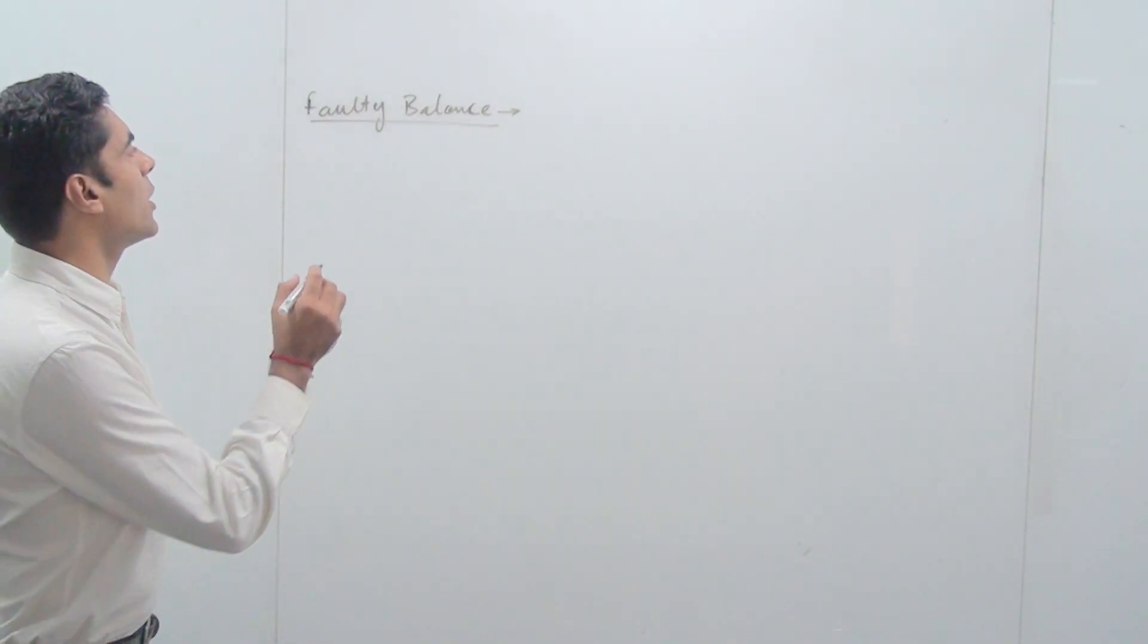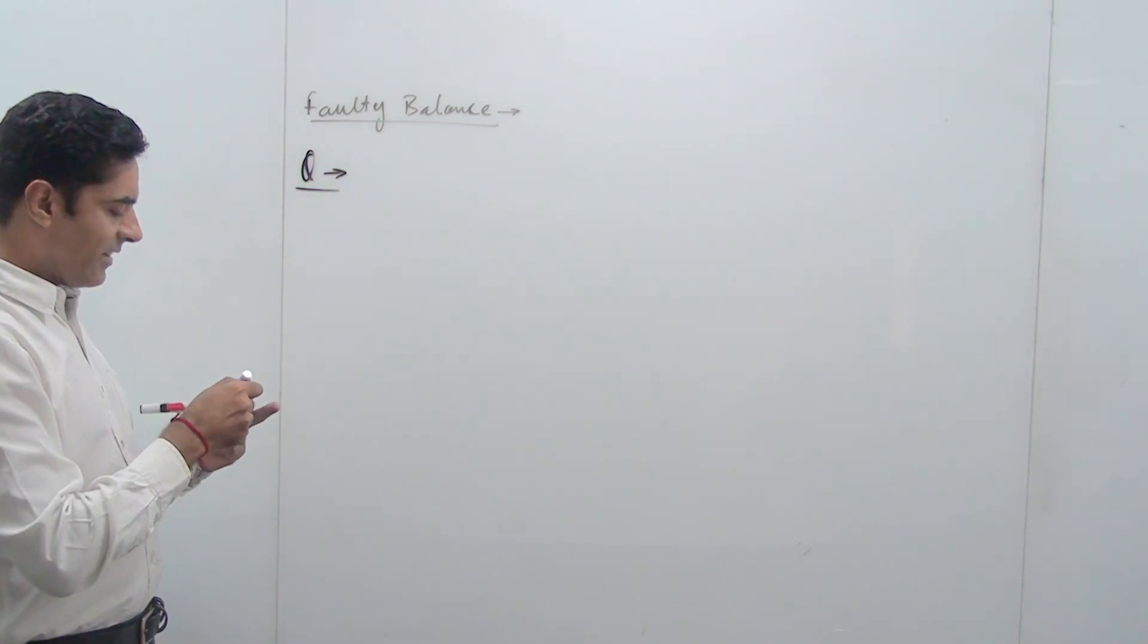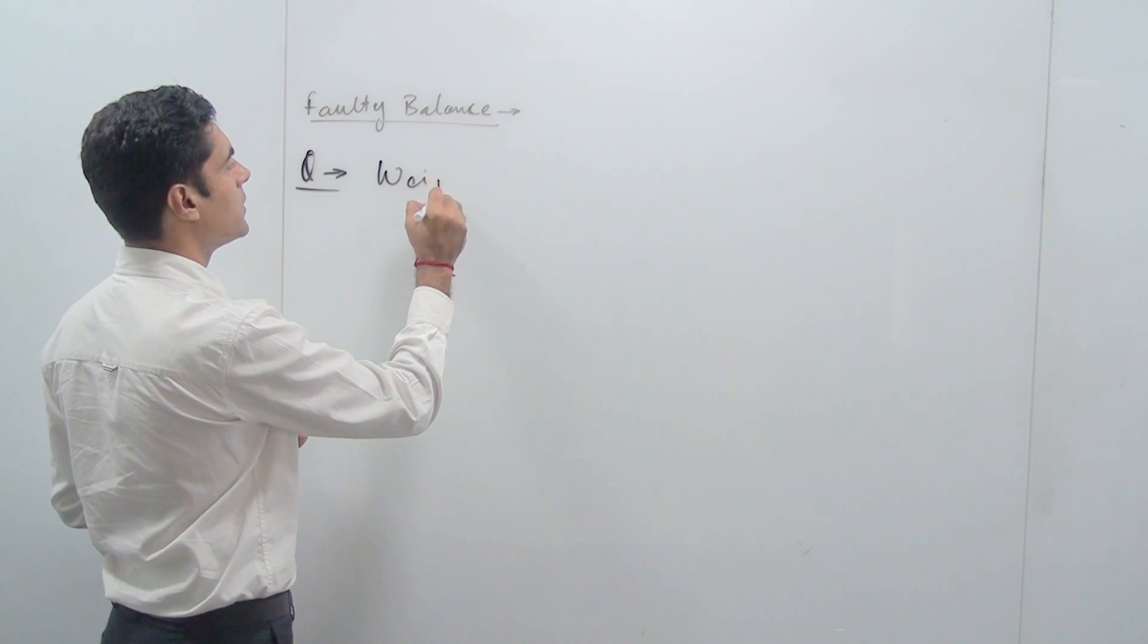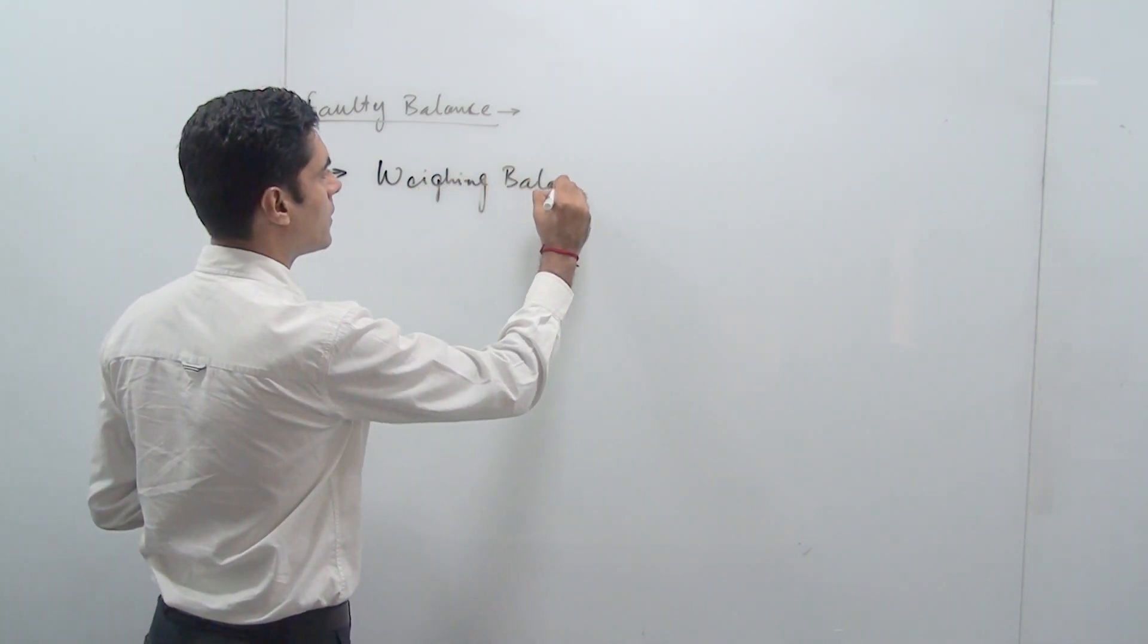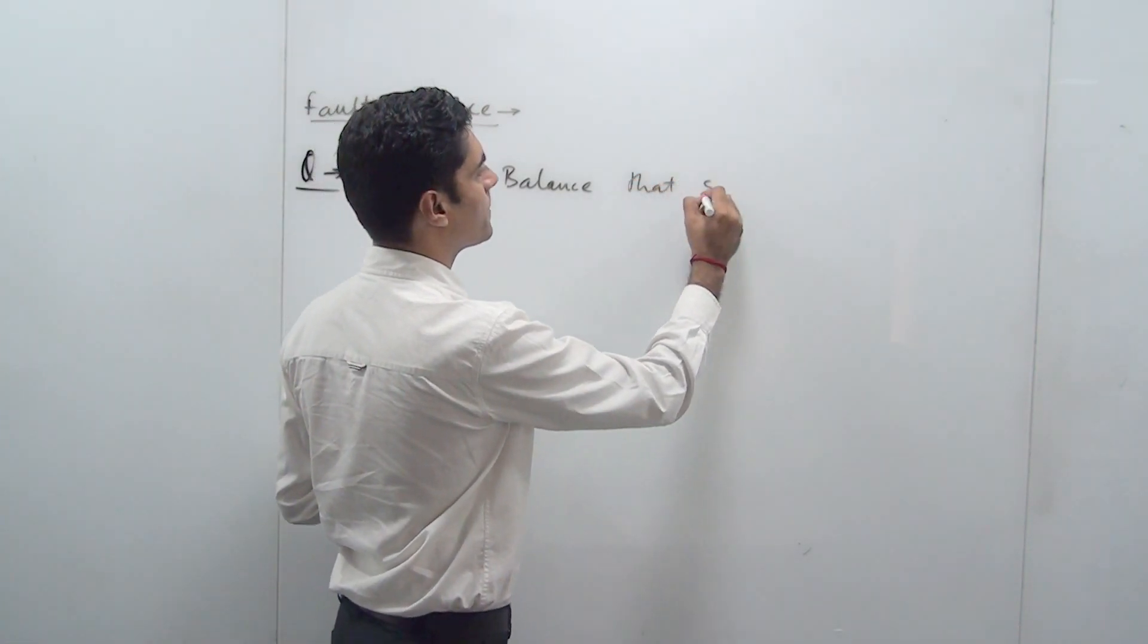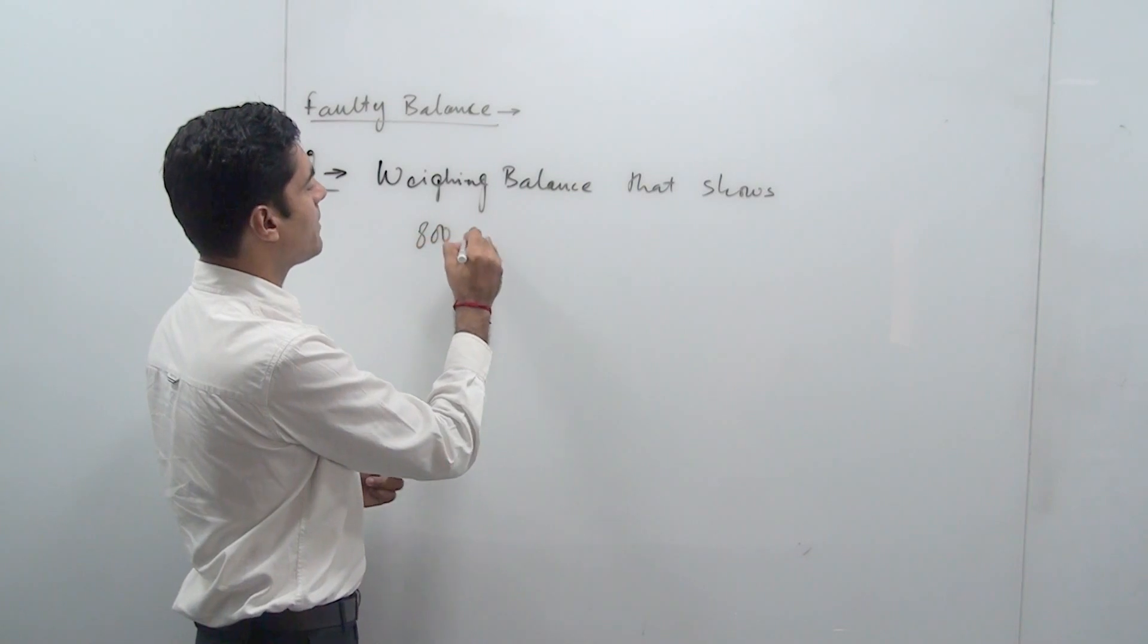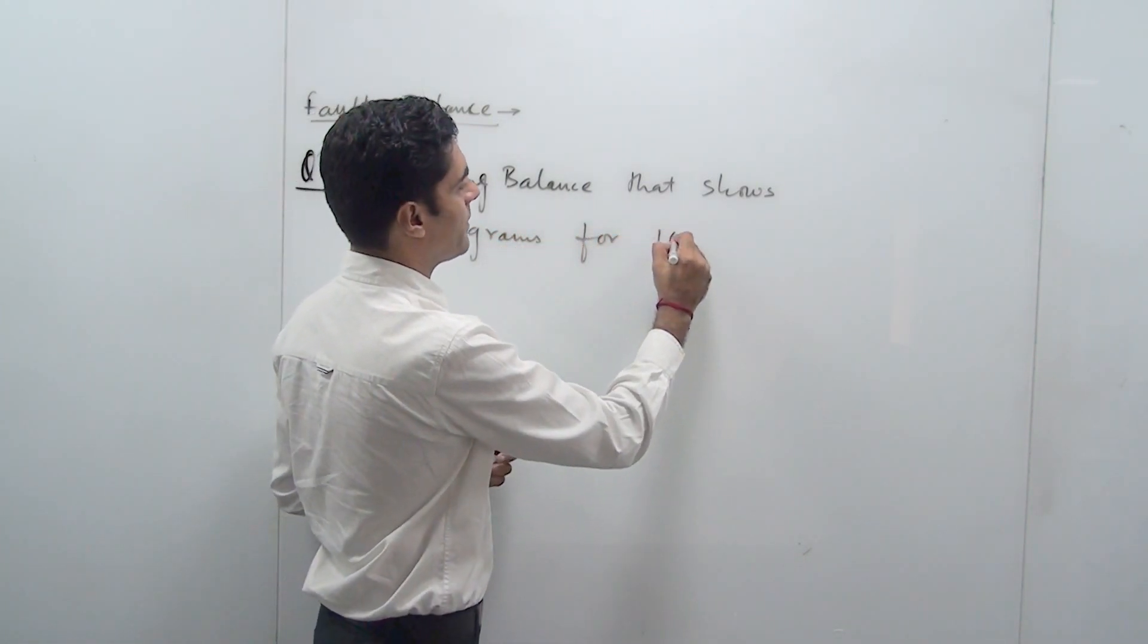So the kind of question that you can encounter in faulty balance is let's say there is a shopkeeper and he's having a pan balance that shows 800 grams for 1000 grams.